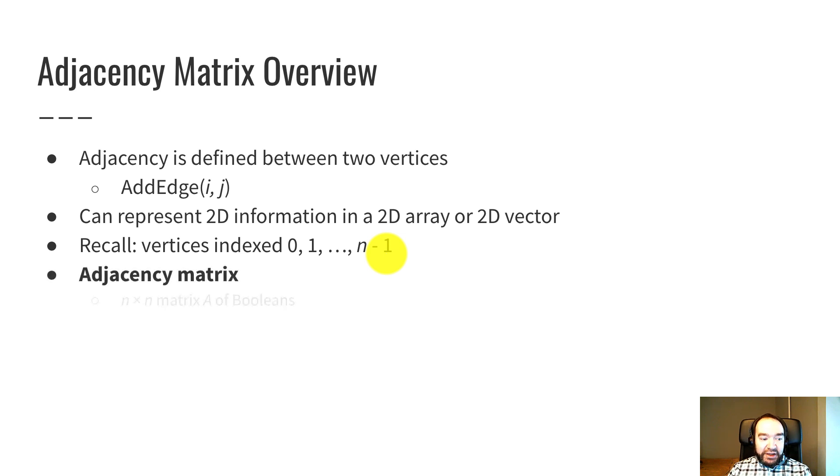So an adjacency matrix is an n by n matrix A of booleans. The main part of the data structure is an n row, n column matrix. In other words, a 2D array or 2D vector and the data type of each element is a boolean true or false.